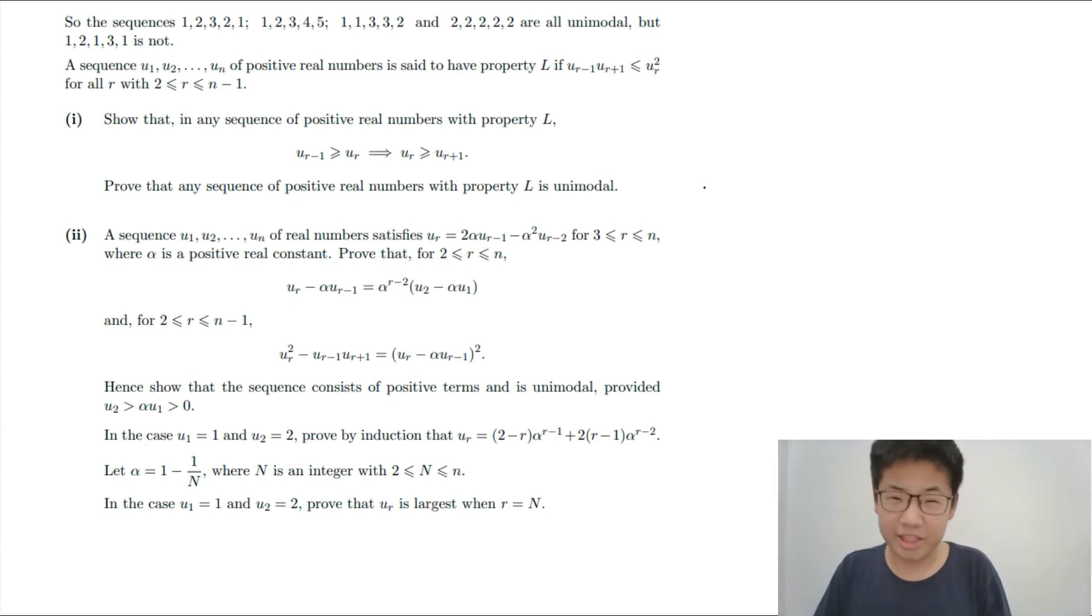This is called a Horadam sequence, which is a generalization of the Fibonacci sequence, where you just put all the coefficients. That means the Pell sequence is in, but the super Fibonacci sequence isn't.